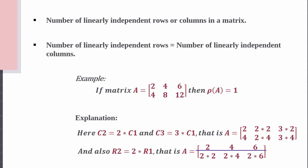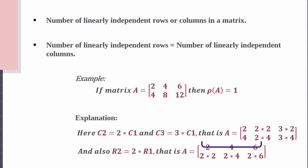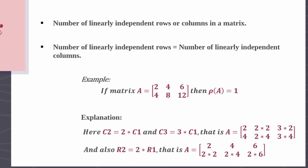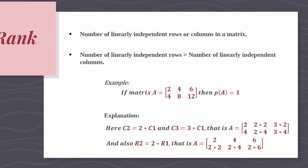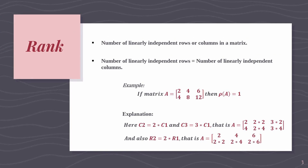We can also verify using rows: R2 is nothing but two times R1. That means Row 1 is linearly independent and Row 2 is linearly dependent. Since Matrix A has one linearly independent row, the rank is again 1. By finding the number of linearly independent rows or columns, we can compute the rank of the Matrix.